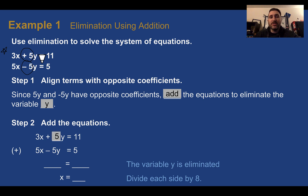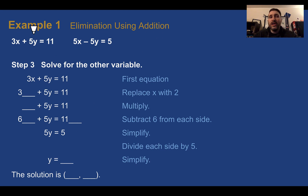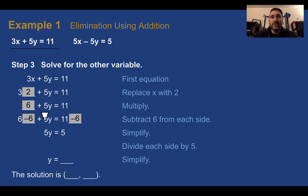Adding the equations: 3x plus 5y equals 11, plus 5x minus 5y equals 5. Plus 5y minus 5y goes to 0. 3x plus 5x is 8x, and 11 plus 5 is 16. So 8x equals 16 — dividing by 8, x equals 2. Now that x equals 2, I can plug it into either equation. Using the first equation: 3 times 2 is 6, plus 5y equals 11. Subtracting 6 from both sides gives 5y equals 5, then dividing by 5, y equals 1. Our final solution is (2, 1).